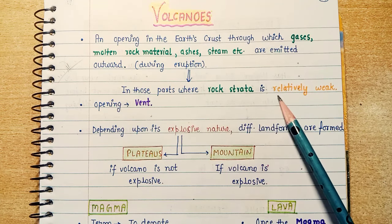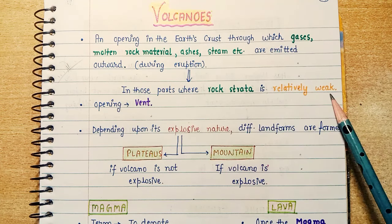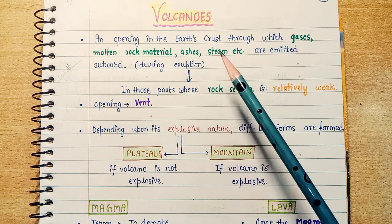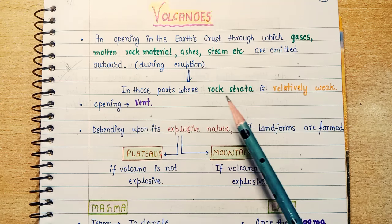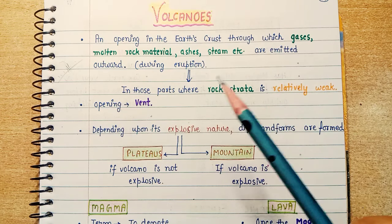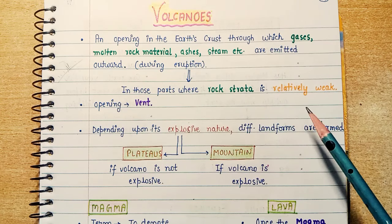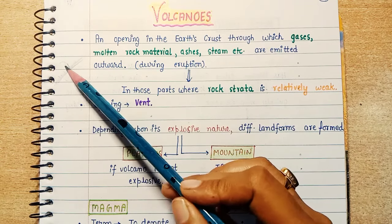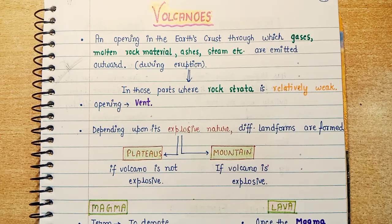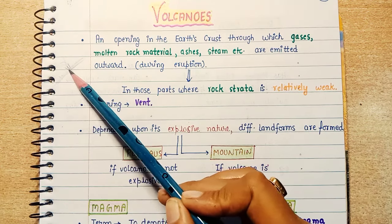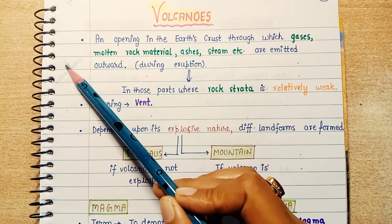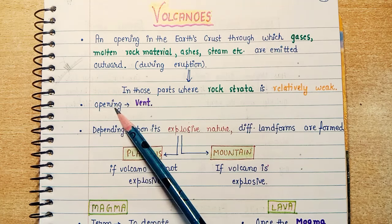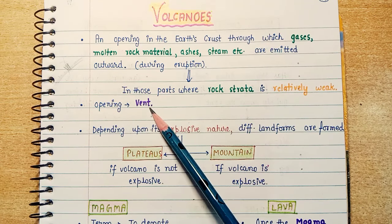Volcanoes occur in those parts where the rock strata is relatively weak. Where the rock part is very weak, the earth's surface part is very weak — that's why there is an opening. From this opening, ashes, steam, and everything else come out. This opening is called a VENT.